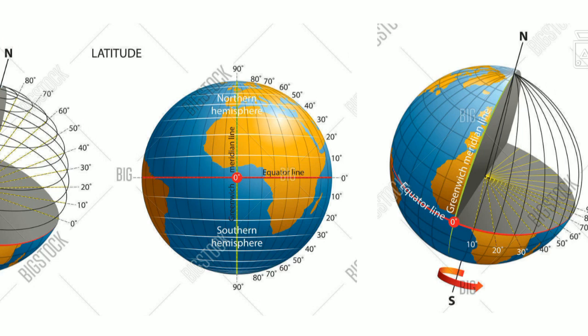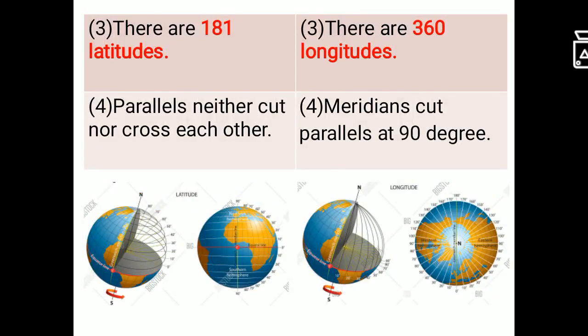So 90 plus 90 is equal to 180 and equator is also one there. So 180 plus 1 is equal to 181 latitudes. And there are 360 longitudes.